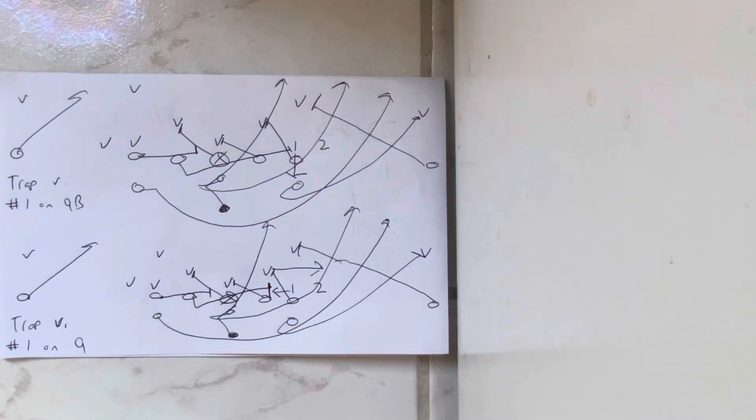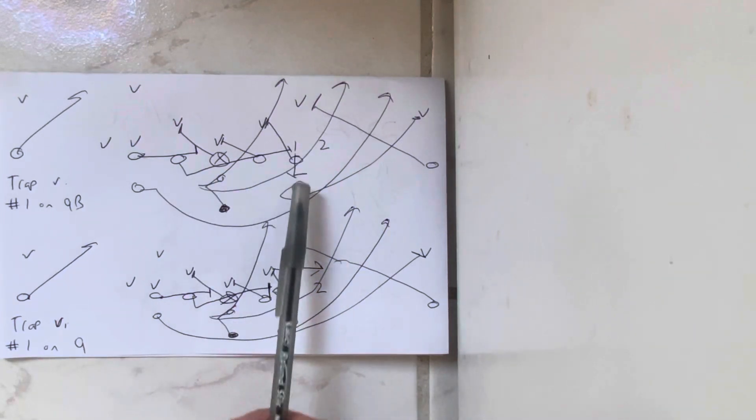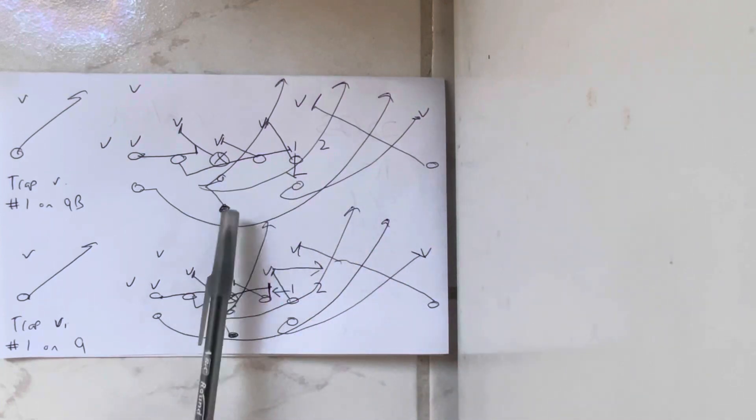Okay, so trap. The whole reason Paul Johnson would run trap is if number one was taking the quarterback. He was coming up the field, and they would trap into the void. So basically, if he's not taking the dive, they were just going to shove him out and put the B back where he wasn't.